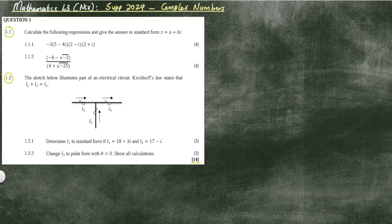The next question is also on complex numbers, so there are quite a lot of marks. For level three, complex numbers carry a lot of marks. The whole of question one may weigh around 30 marks. Let's start with question 1.1.1.